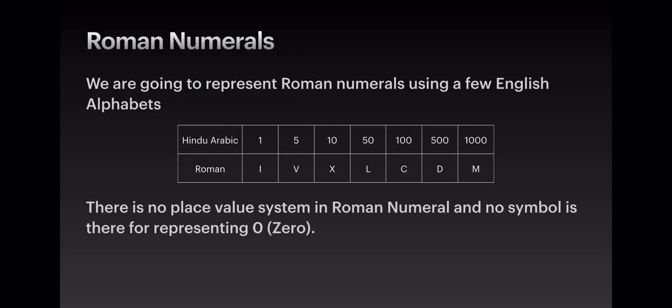Roman numerals are represented using a few English alphabets: I, V, X, L, C, D, and M. Ordinary numbers are the Hindu-Arabic numerals. So 1 is represented by I, 5 by V, 10 by X, 50 by L, 100 by C, 500 by D, and 1000 by M. There is no place value system in Roman numerals and no symbol to represent zero.